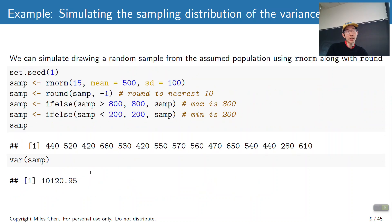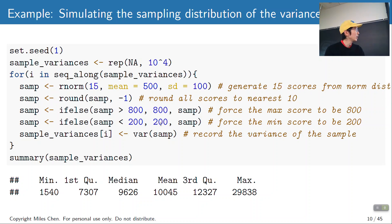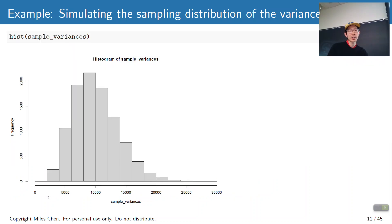I could do this again and again. Let me repeat this process 10,000 times. I'm going to loop from 1 through 10,000, draw a random sample of 15 values, round them, replace any values over 800 with 800 or under 200 with 200, then calculate the variance and record it. The mean sample variance comes out right around 10,000. The median is a little bit less. The maximum sample variance is close to 30,000, around 29,800. The minimum sample variance is around 1,500. I can create a histogram of all my sample variances.